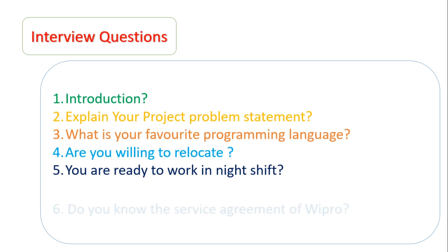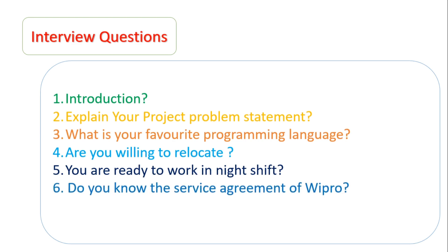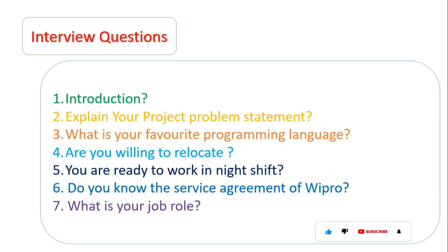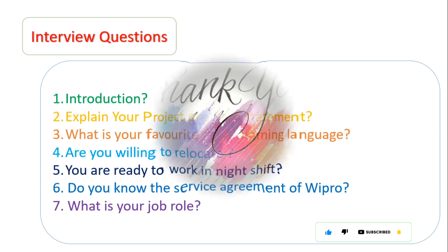The fifth question was are you ready to work in the night shift. They then asked do you know the Wipro service agreement — as we know, the Wipro service agreement is for one year, and if you break this agreement you need to pay a penalty of 75,000 to the organization. Finally, they asked do you know what the job role is. Thanks for watching — like, share, and subscribe for more videos.